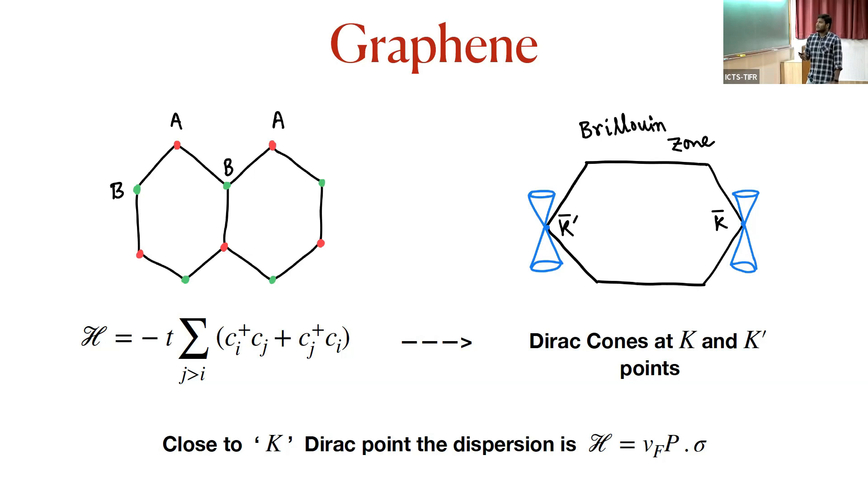The interesting fact is that the conduction minus valence bands touch at two inequivalent points in the Brillouin zone, called K and K prime. These are also called Dirac cones because if one is interested in the low energy properties of this Hamiltonian, you can expand to first order in momentum away from this Dirac point and you will get this linear Hamiltonian where sigma is the Pauli matrices acting on the A, B sublattice.